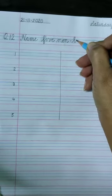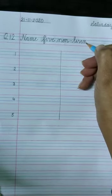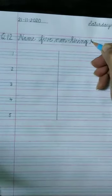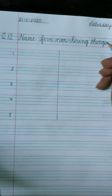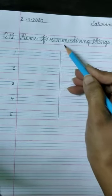Then write L-I-V-I-N-G, living. Then write T-H-I-N-G-S, things. So question number 12 is: name five non-living things.